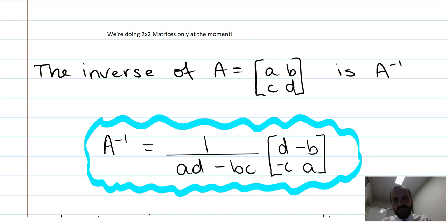For now, we're only going to do the inverse of 2 by 2 matrices. If we go more than that, we can do it, but it's much more complicated. The inverse of a 2 by 2 matrix, which is A, B, C, D.